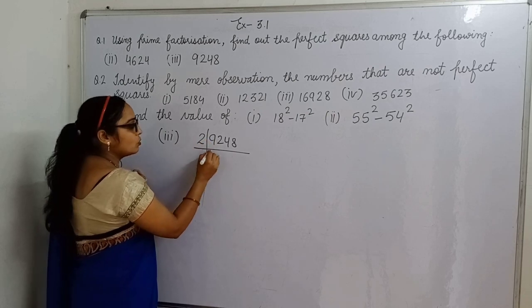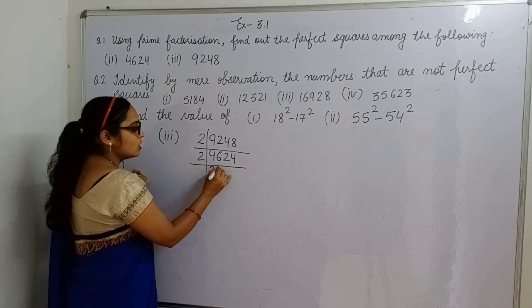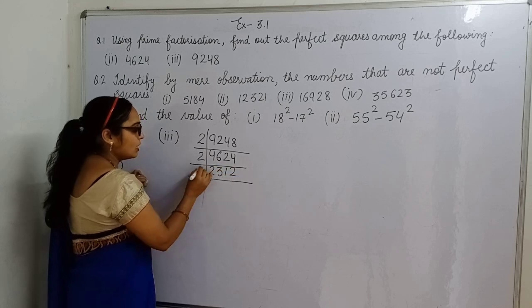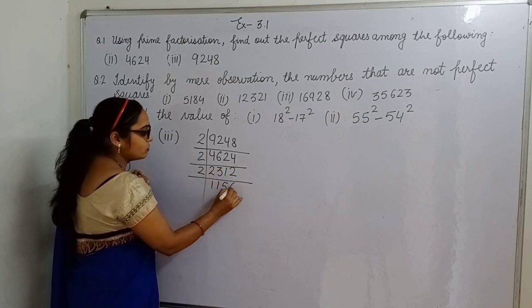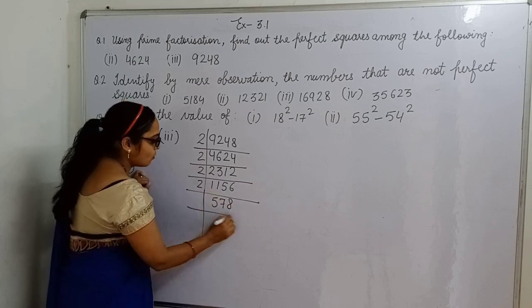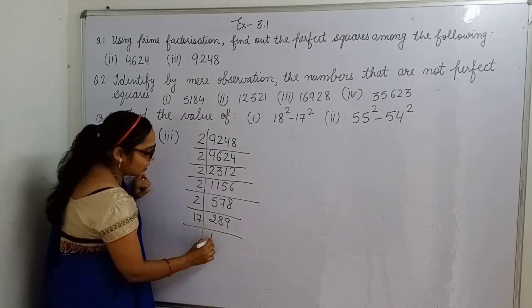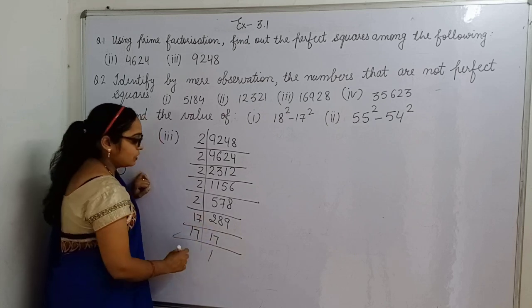Now it is divisible by 2: 4624, then 2, 2312, again 2, 1156, 2, 578, 2, 289. Now again 2 - no, it is 17, 17, 17.